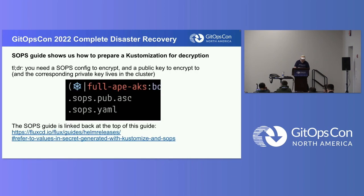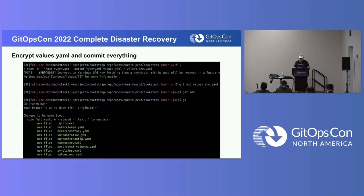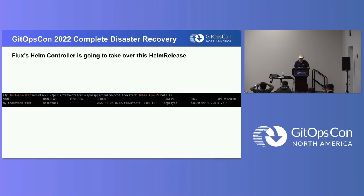Except one more thing: we said we're going to have secrets in a values.yaml file, so that means we need to encrypt it. That means we need a SOPS configuration. If you follow that link I posted before, it has information connected to the SOPS guide in Flux to tell you how to set up SOPS from scratch with Flux. We're going to follow the guide and commit everything to Git. Flux's Helm controller is going to take over this release, and if we've lined everything up correctly, you should see Helm controller taking over the Helm release.